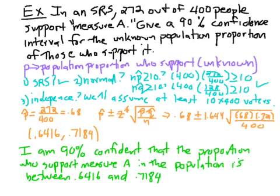These colorful things down here run through the entire inference toolbox. It works the same way as section 10.2 for means. First, we identify the unknown parameter, which is p, the population proportion who support this measure. The conditions: it's a simple random sample. Is the sampling distribution of p-hat normal?